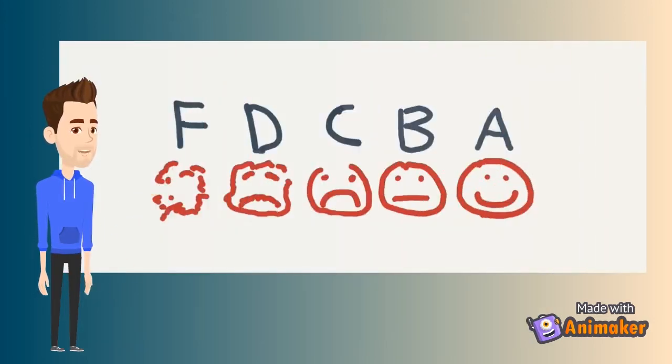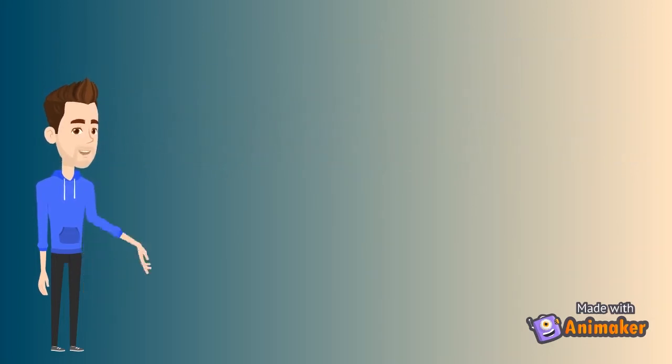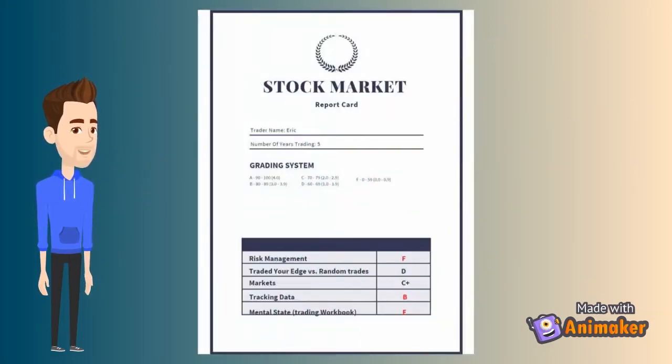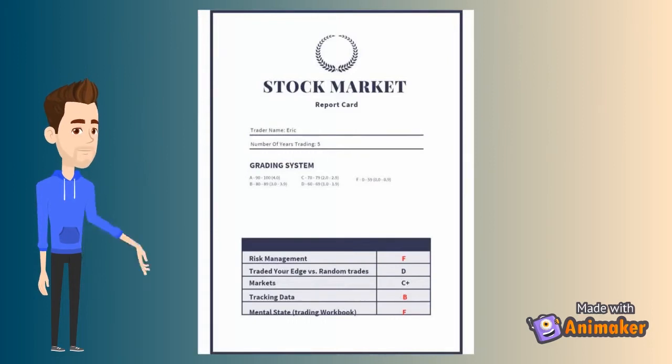In college, your progress is tracked by your grades. New traders often think that your grade is your P&L, when in fact your stock tracker and your trading workbook truly track what your grades are in the market. All your P&L is is reflecting how well you understand what you are learning and how well you are able to execute what you have learned.